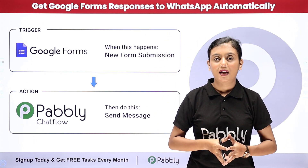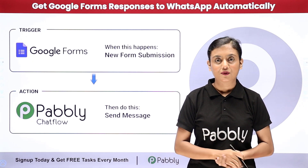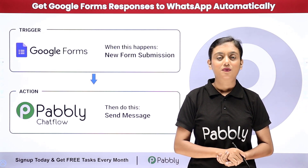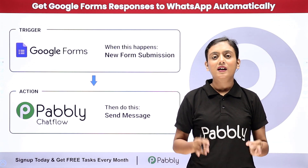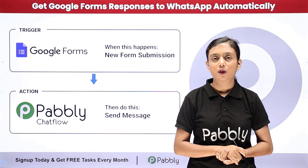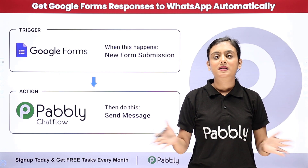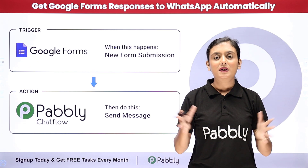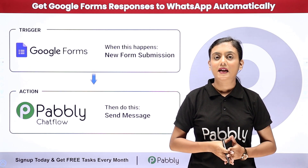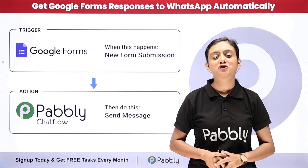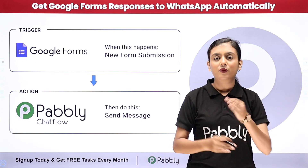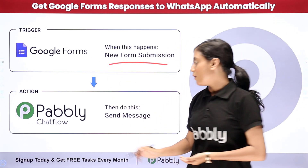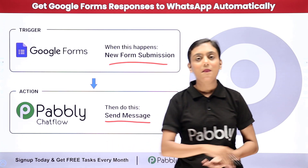I am an owner of an event planning business and using Google Forms I have created a form to collect participant data for a recent event I am organizing. My objective is that as soon as a participant does a new form submission, I want to get all the details — participant name, email, and phone number. Doing this manually is very time consuming and hectic.